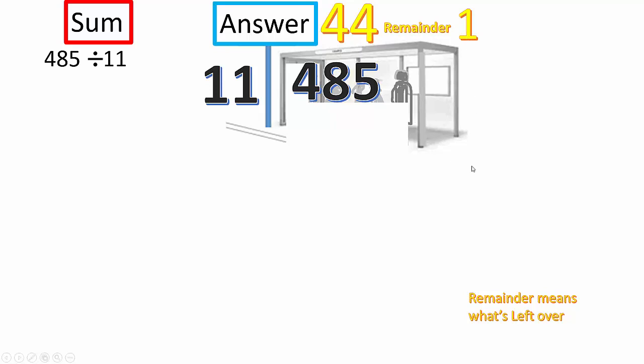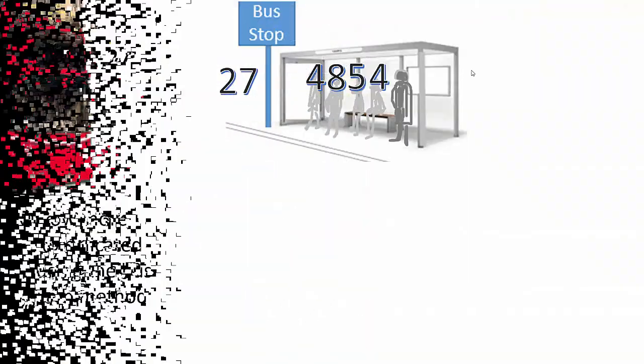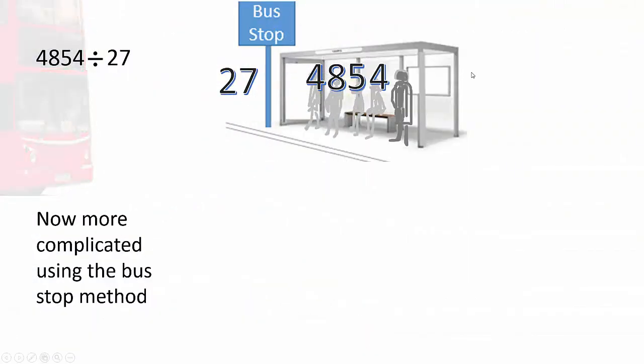Remainder means what's left over. So, there are 44 elevens in 485 with remainder, what's left over, 1. Now, more complicated using the bus stop method. 27 into 4854.